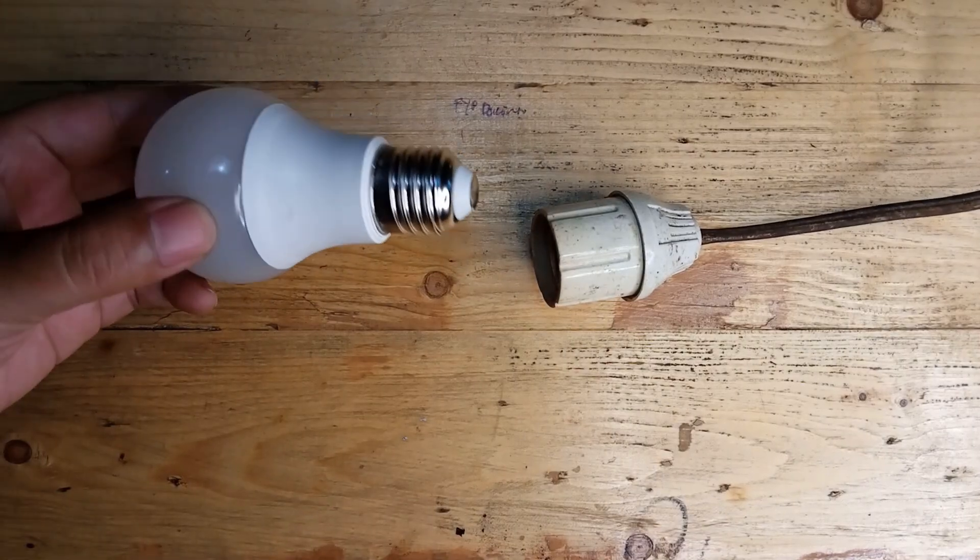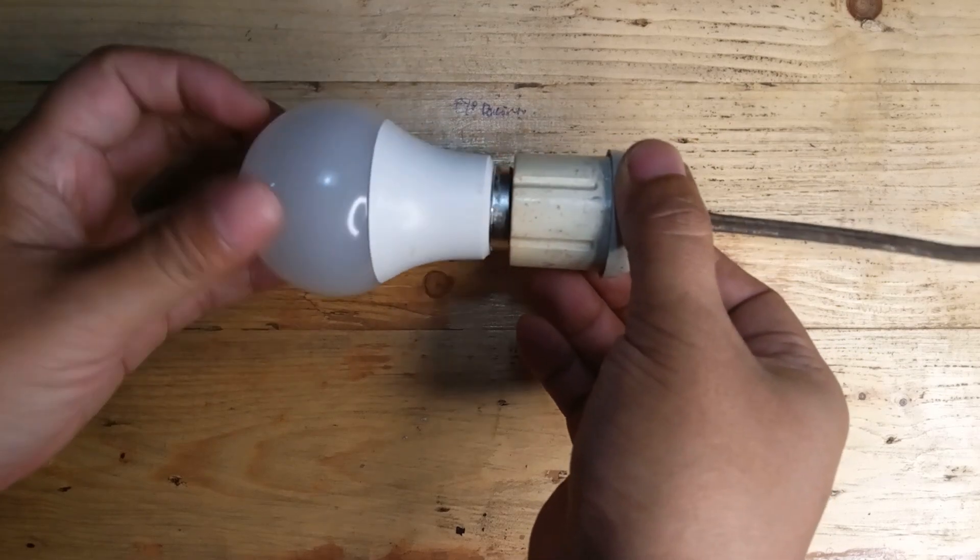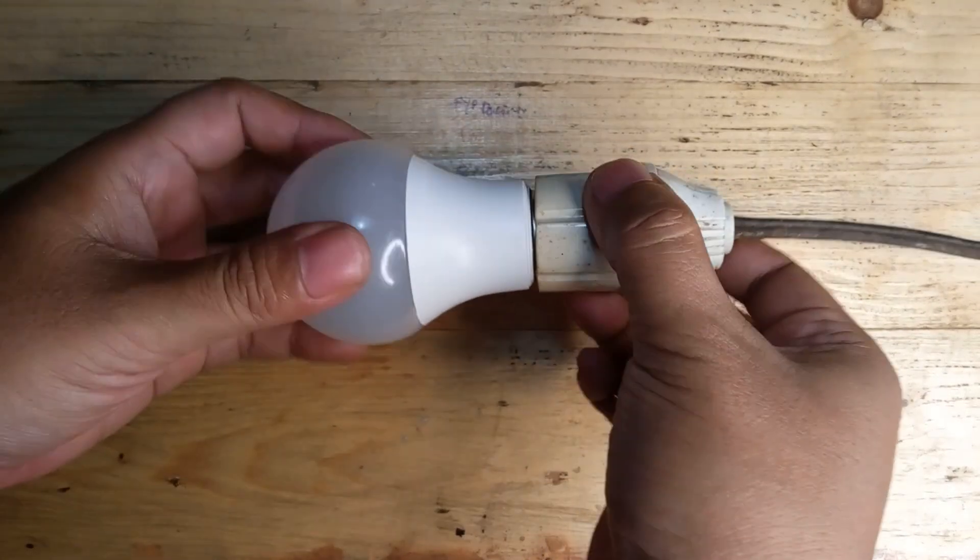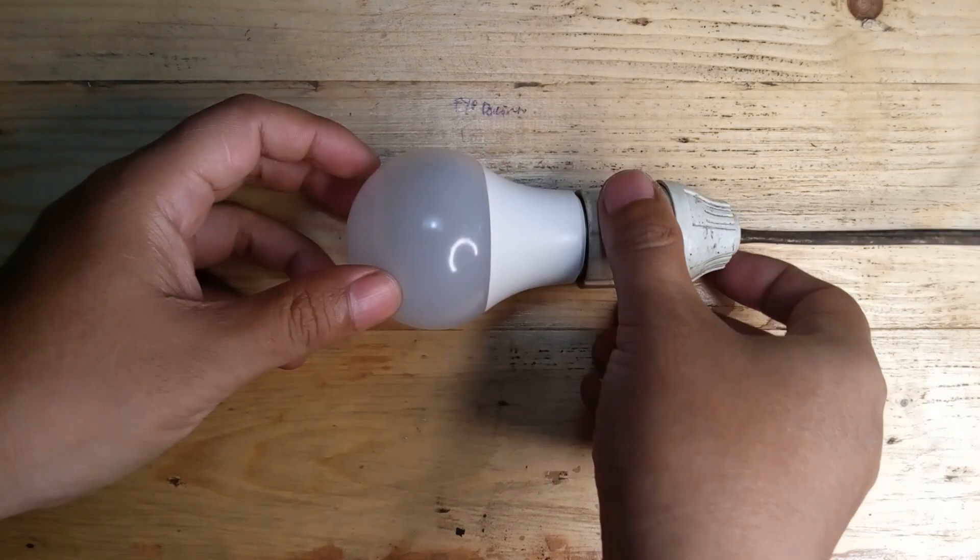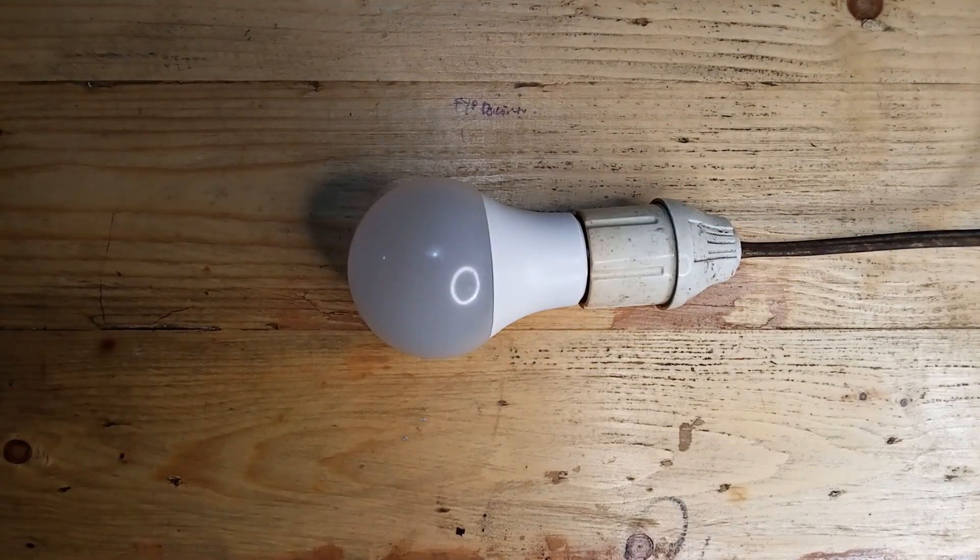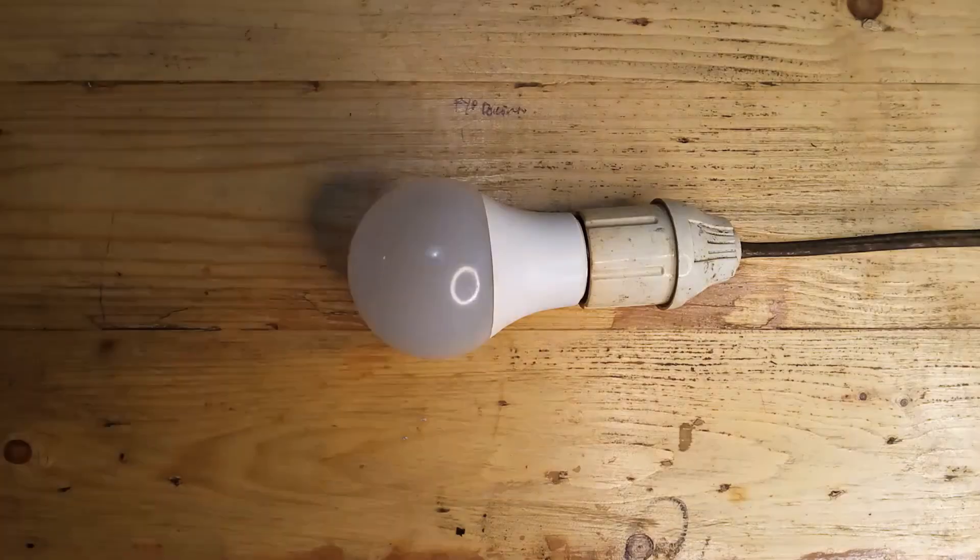And there you have it, your very own LED light bulb. It's cost effective, easy to assemble, and works just as well as a pre-assembled one from the factory. Try it out and let me know how it goes in the comments. Don't forget to like, share and subscribe for more DIY tips and tricks. Thanks for watching.